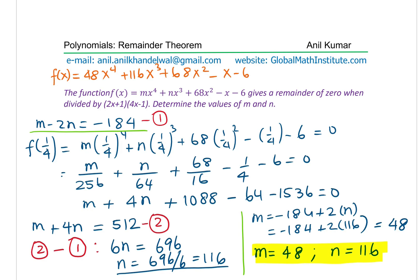So you now have a polynomial whose all values are given to you. Here is a question for you: find the other roots. Use your learnings about polynomials, the remainder theorem, the factor theorem, to get the other roots and then sketch the graph.